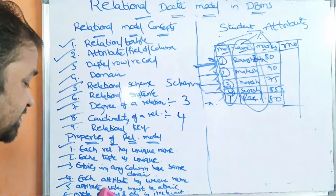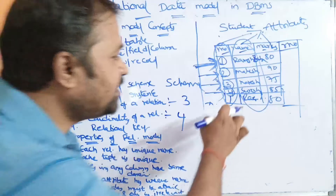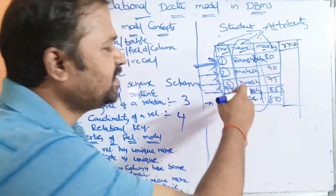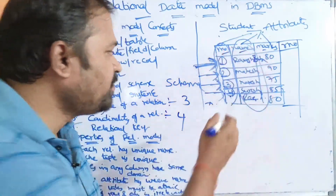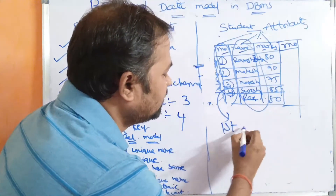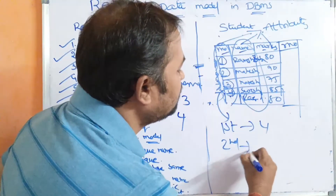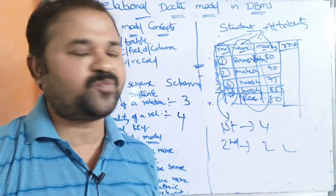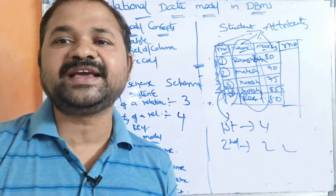The last property is: the order of rows and columns is irrelevant. Here we have four rows — one, two, three, four — but we can enter them in any order. For example, the first row may be '4, Suresh, 85' and the second row may be '2, Mahesh, 90.' We can give values in any order; there is no problem. So this is about the introduction to the relational data model.